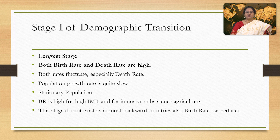The first stage is also known as the pre-development stage. It is the longest stage. In this stage, both birth rate and death rate are high, and both rates fluctuate, especially the death rate. Growth rate is quite slow and population remains stationary. Birth rate is high as a result of lack of family planning, religious belief, high infant mortality rate, and need for workers in intensive subsistence agriculture. This stage does not exist today, as even in most backward countries, birth rate has reduced.